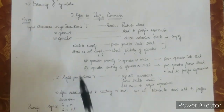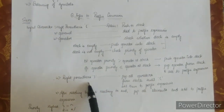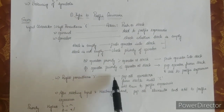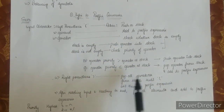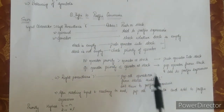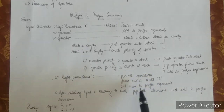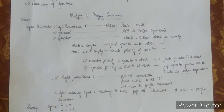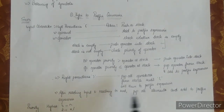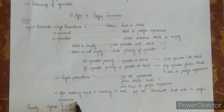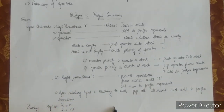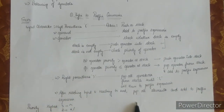If the input character is a right parenthesis, pop all operators from the stack until you find the left parenthesis, and add them all to the postfix expression. After reading the entire input and reaching the end, pop all remaining elements from the stack and add them to the postfix expression.